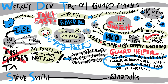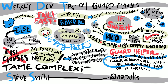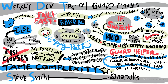If statements can take over your functions if you're not careful, making them much harder to understand and thus much harder to maintain. Cyclomatic complexity refers to the total number of paths through a given function, and should be kept in the low single digits whenever possible. Using guard clauses is one simple way to tame complexity in your functions and keep them smaller, simpler, and easier to maintain.